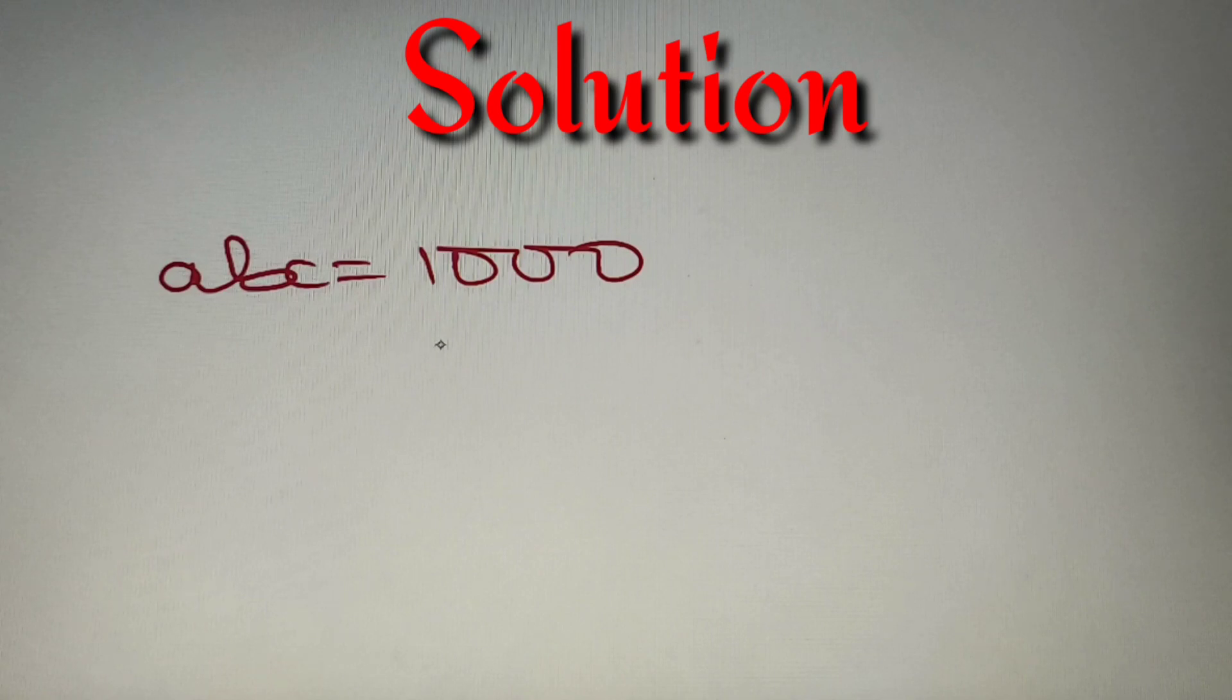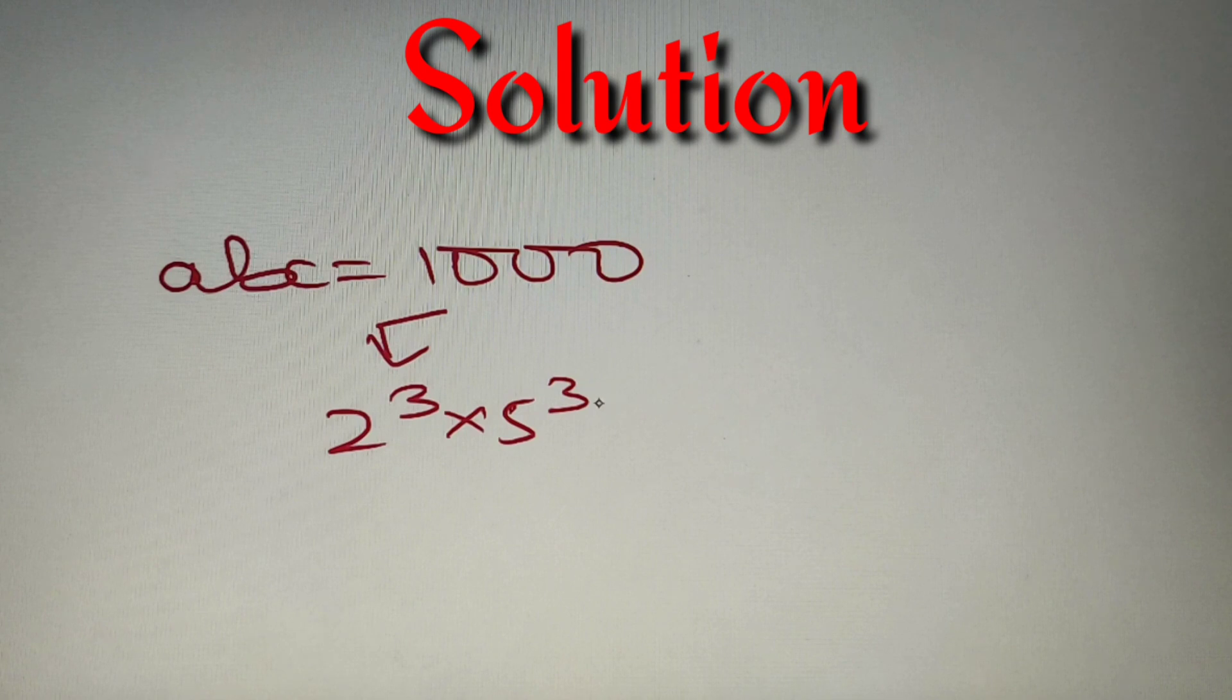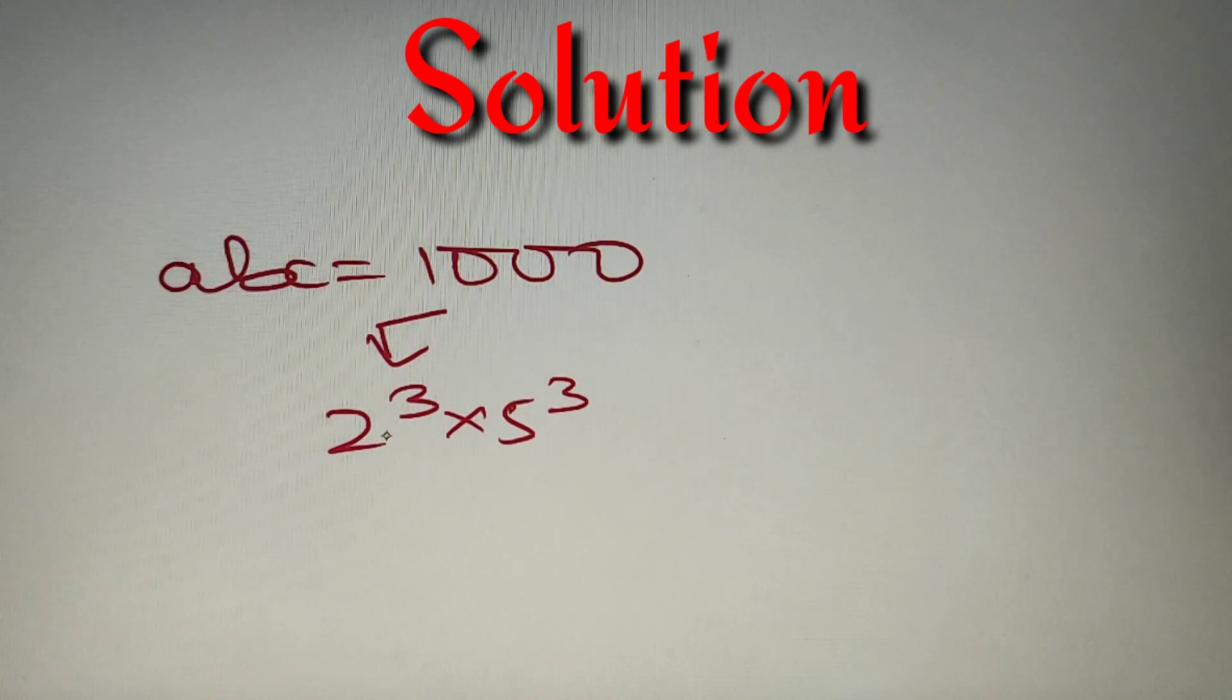The first step in solving this question is to prime factorize 1000. Now 1000 can be prime factorized as 2³ × 5³, because 2³ is 8 and 5³ is 125. So 8 × 125 is indeed 1000.